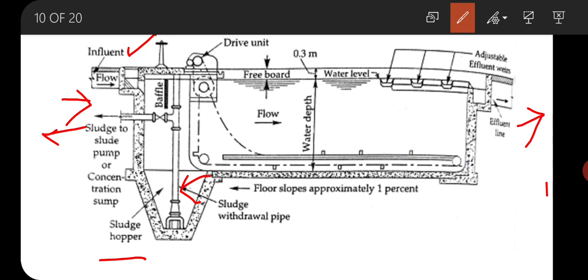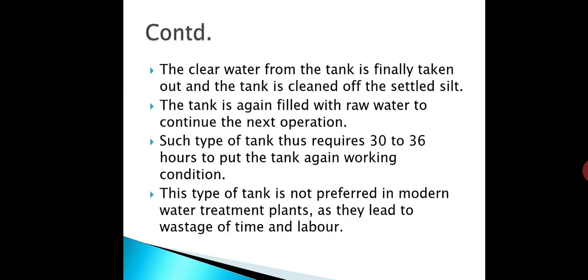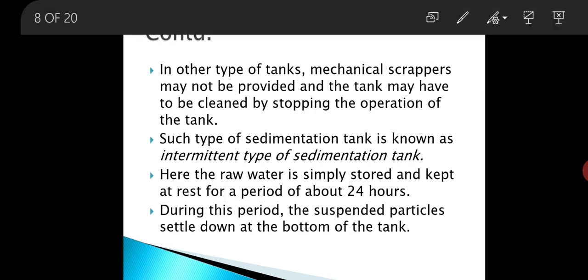Such tanks are known as continuous flow type sedimentation tanks. In such tanks, the flow velocity is only reduced and the water is not brought to complete rest. But in the other type of tank, mechanical scrapers may not be provided, and the tanks have to be cleaned by stopping the operation. Those types of tanks are known as intermittent sedimentation tanks.